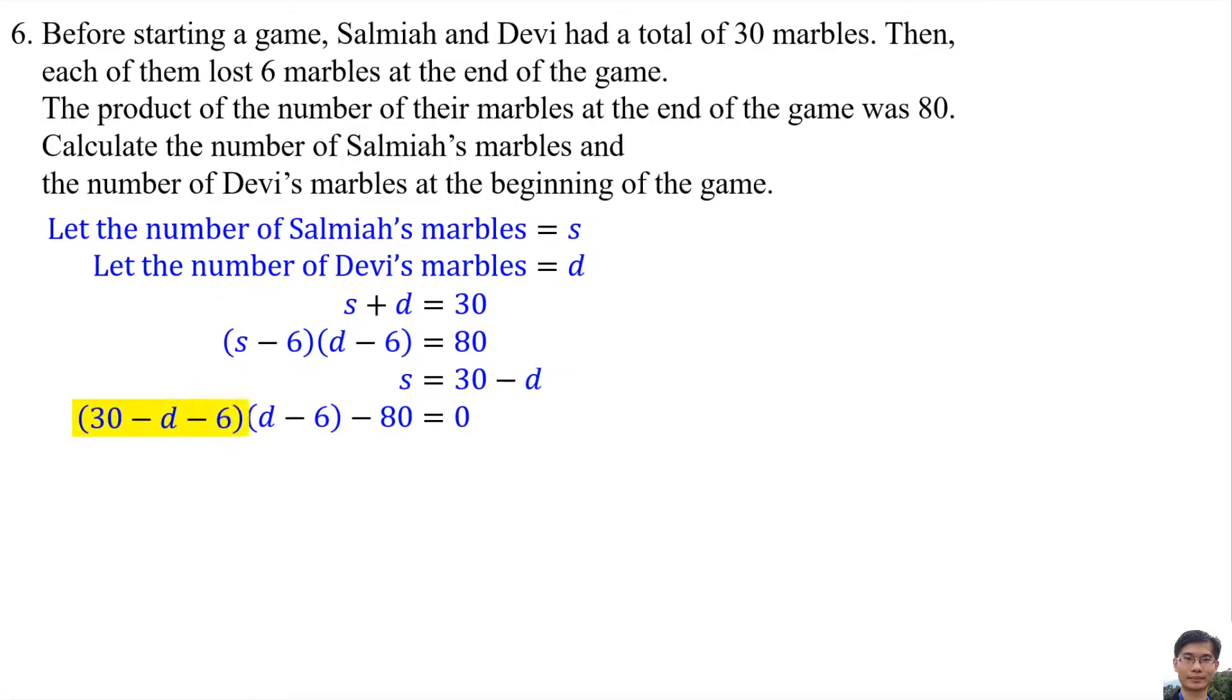After that, we simplify this expression. 24 times D equals 24D. 24 times negative 6 equals negative 144. Negative D times D equals negative D squared. Negative D times negative 6 equals 6D. 24D plus 6D equals 30D negative 144 negative 80 negative 224.